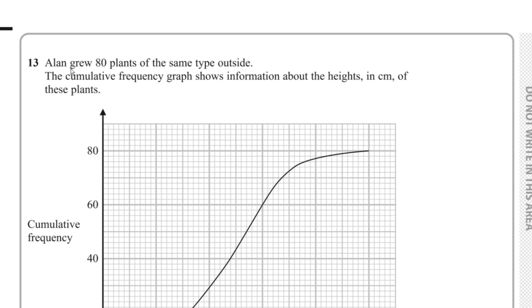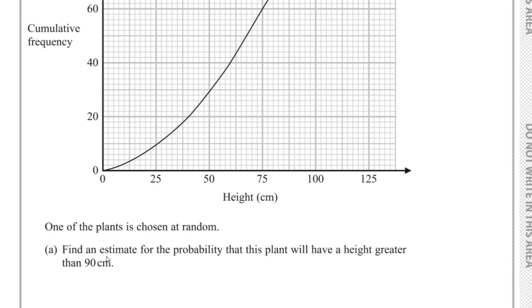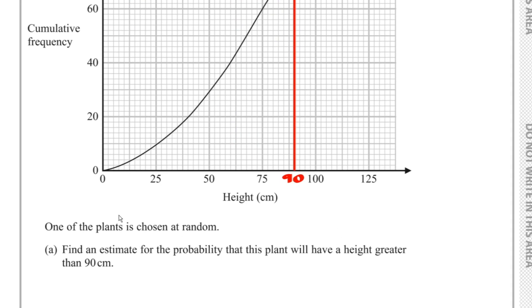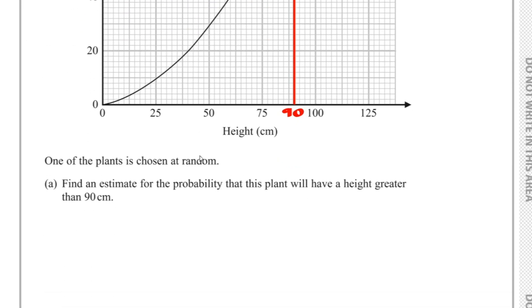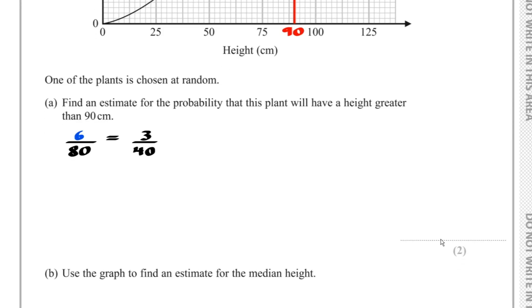Question 13: Alan grew 80 plants outside. A cumulative frequency graph shows their heights in centimetres. Part A: Find an estimate for the probability that a randomly chosen plant has height greater than 90 cm. Reading from 90 cm on the graph gives a cumulative frequency of 74. So the number of plants above 90 cm is 80 - 74 = 6. Probability = 6/80 = 3/40.